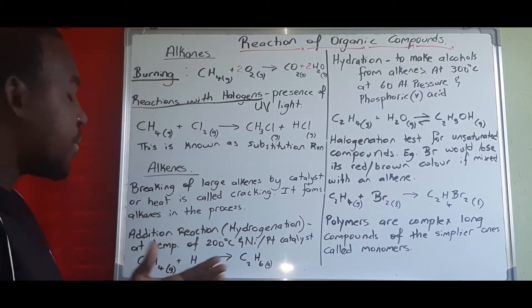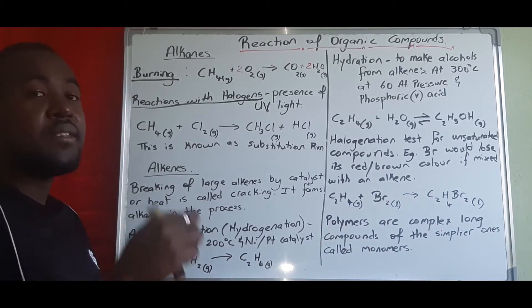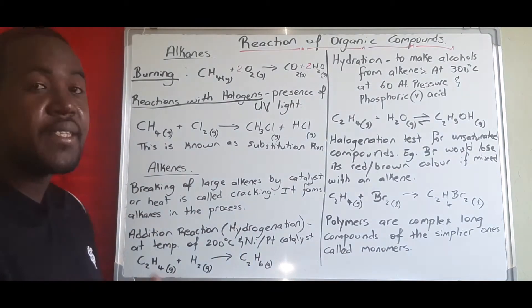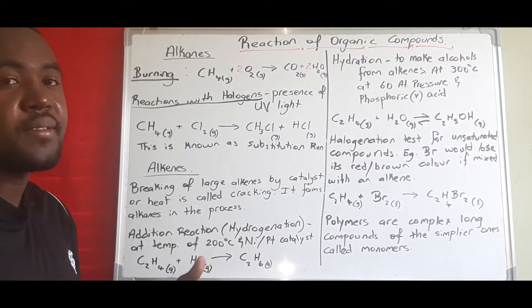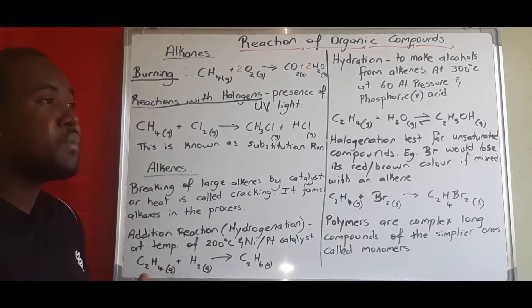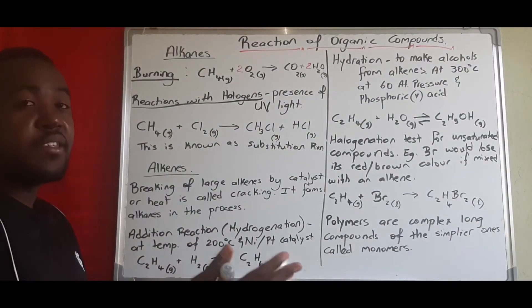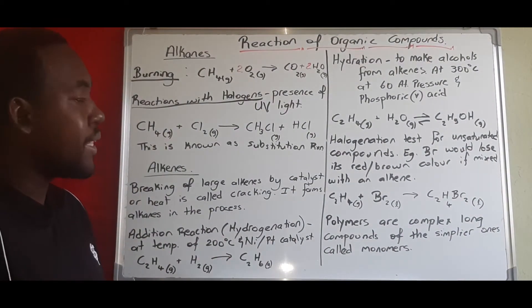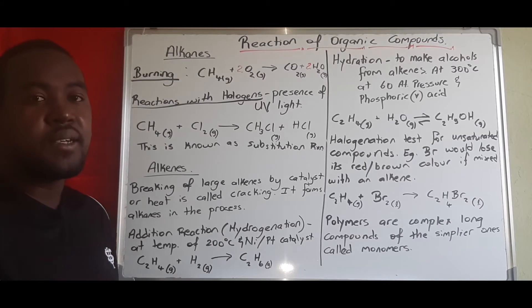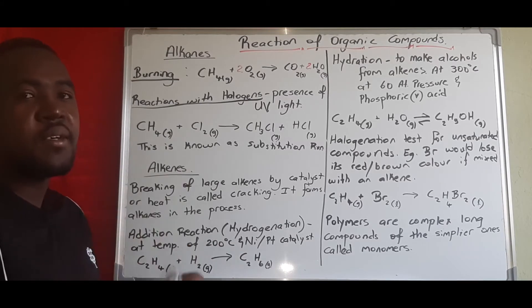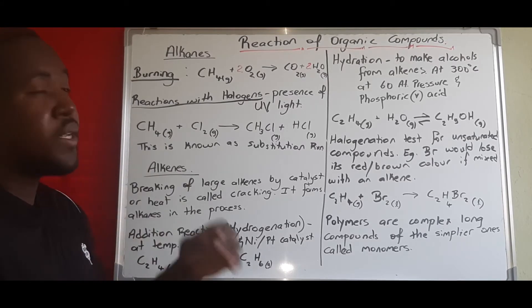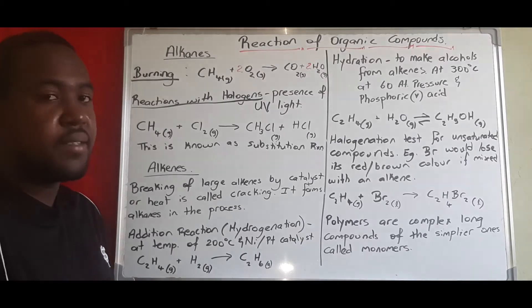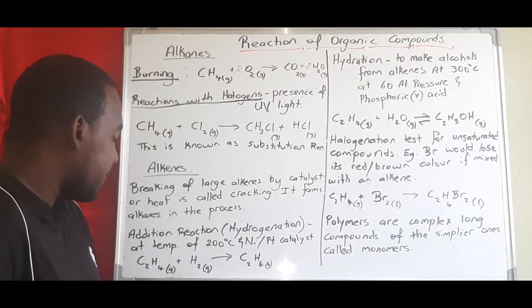We have two types of cracking: thermal cracking and catalytic cracking. Thermal means we apply heat to break the bonds, and catalytic means we use a catalyst to break the bonds in those alkanes.